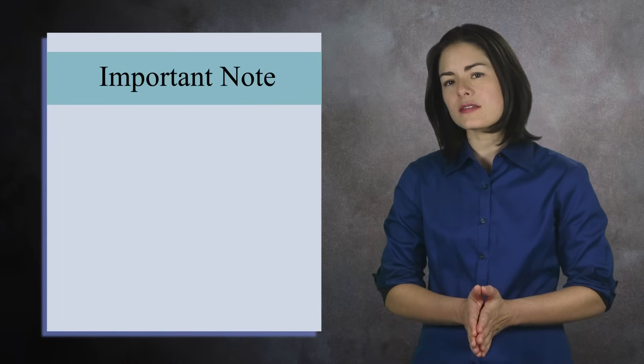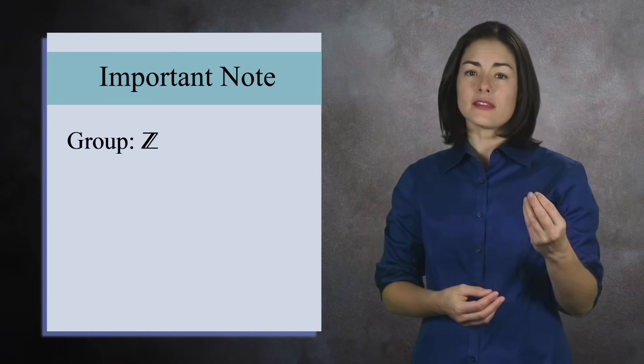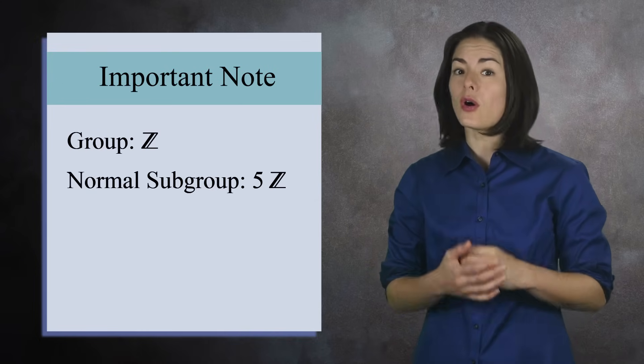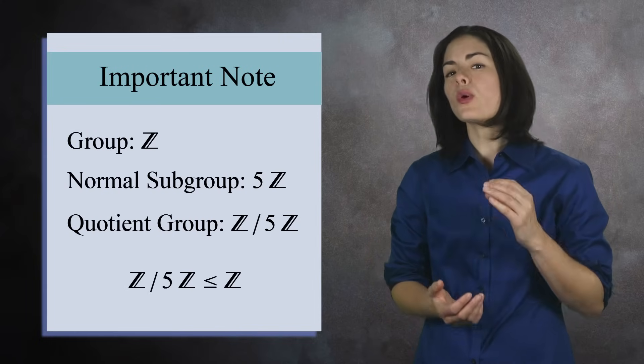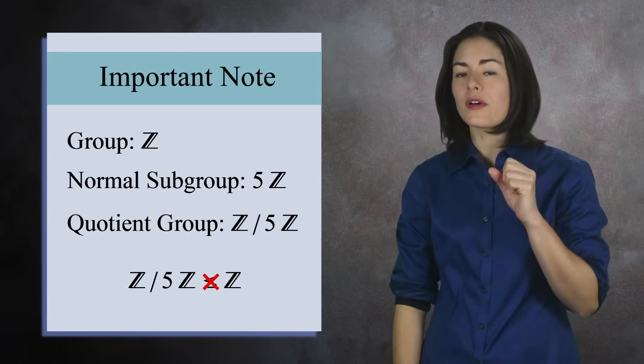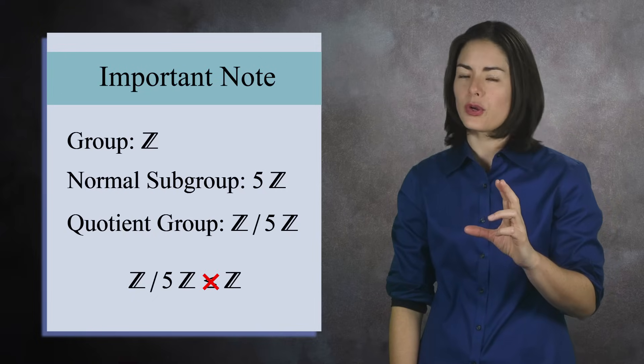I'd like to point out one more thing. In the example we've discussed, we started out with a group Z, then took a subgroup 5Z, which is called a normal subgroup, and used these two to create a quotient group out of the cosets. The quotient group is not a subgroup of Z. It's an entirely different group.